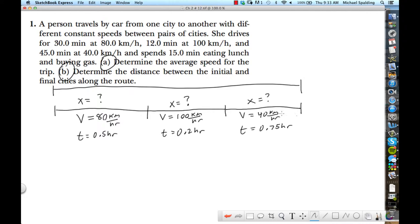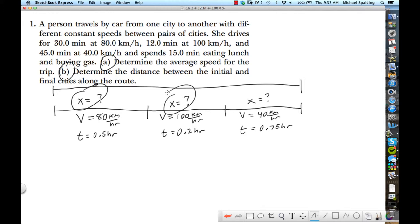What we have to do is find, oops, we've got to find this displacement, that displacement, and that displacement. All right, so what's the equation we're going to use to find those displacements? Velocity is equal to displacement over time. So what's displacement equal to? Velocity multiplied by time.